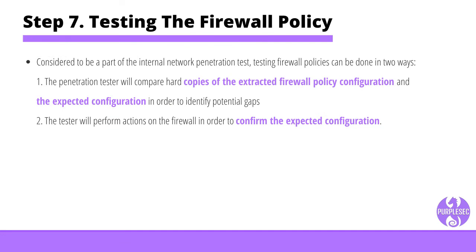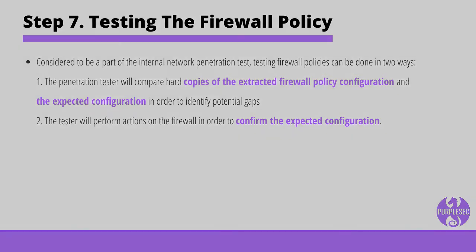Step seven: testing the firewall policy. Testing firewall policies is sometimes part of the internal network penetration test and can be done in two ways. The penetration tester will either compare hard copies of the extracted firewall policy configuration against the expected configuration to identify potential gaps, or perform actions on the firewall to confirm the expected configuration.